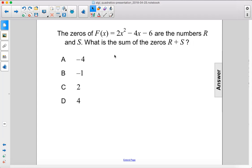The zeros of f of x equal 2x squared minus 4x minus 6 are the numbers r and s. What is the sum of the zeros r plus s?